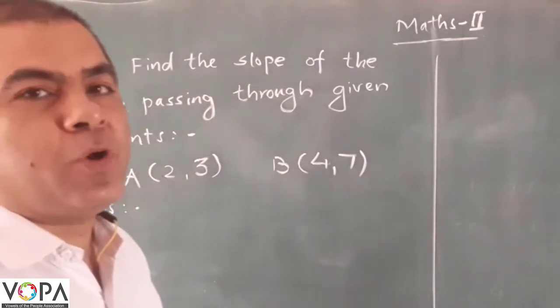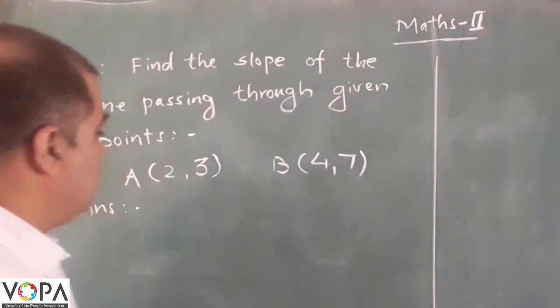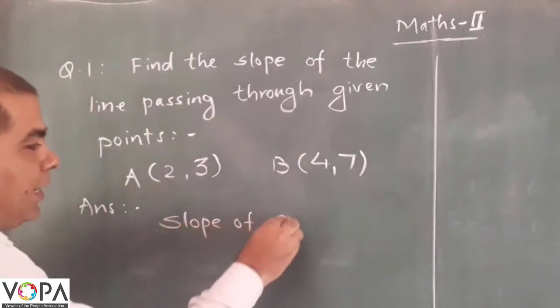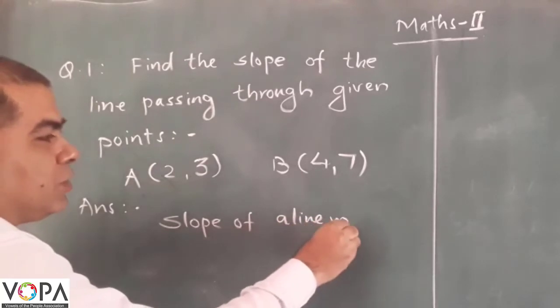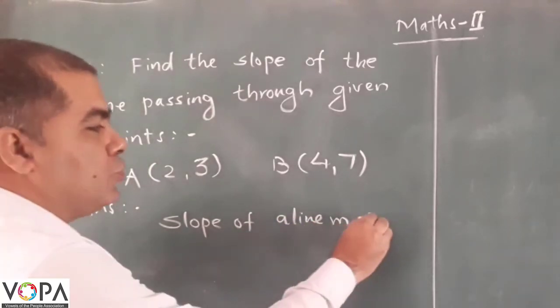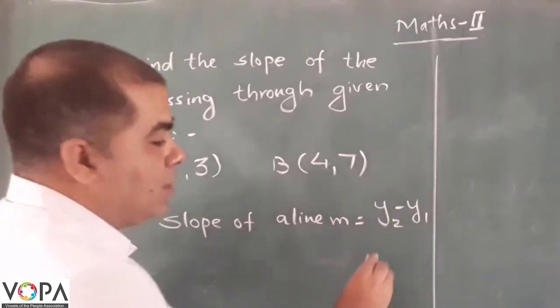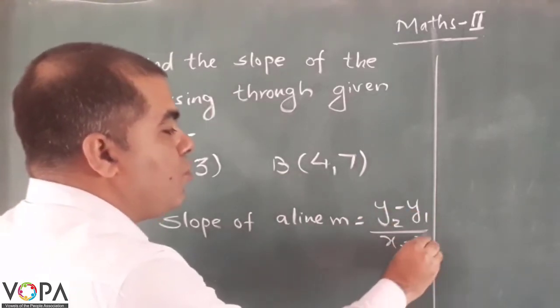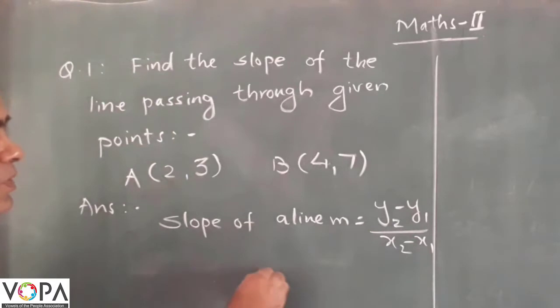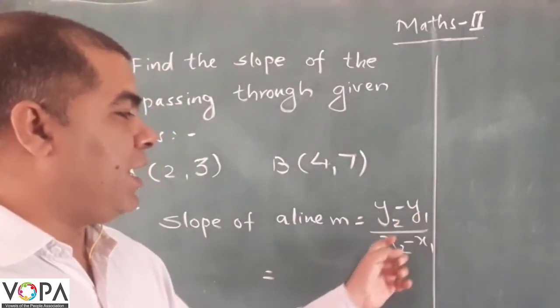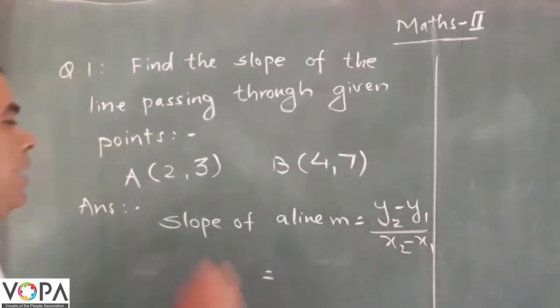Now, what is the formula for slope of a line? Slope of a line, m, equals y2 minus y1 upon x2 minus x1. Now put the values of y2, y1 and x2, x1 here.